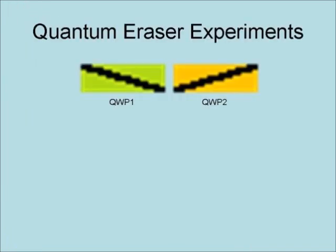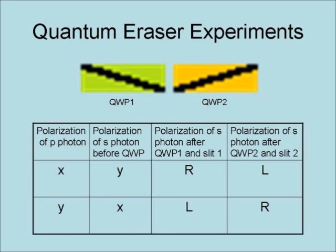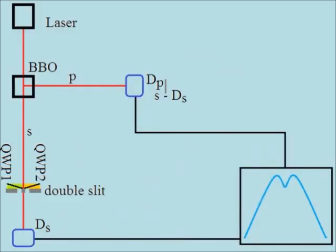This is where things start getting strange. Quarter-wave plates, labeled QWP, are special crystals that change linearly polarized light into circularly polarized light. There are two quarter-wave plates: for a photon of a given linear polarization, one plate changes it to right circular polarization and the other to left circular polarization. Since the S and P photons are entangled, knowing the polarization of the P photon allows us to know the original polarization of the S photon. Placing QWPs in front of each slit makes it possible to determine which slit the S photon went through without disturbing it — and as a result, we get the double peak pattern instead of the interference pattern.